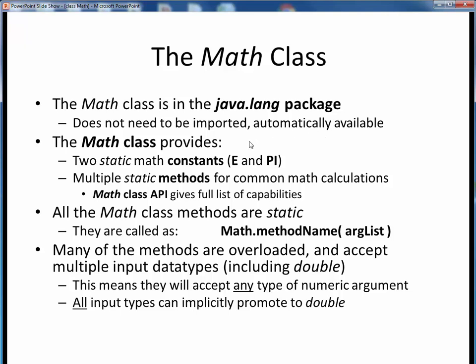The Math class provides two standard mathematical constants for the natural log e and for pi. It also provides a number of methods to perform many common math calculations. These lecture notes will give only an abridged version of what's in the Math class. For a full list of its capabilities, you'll need to explore its Java API, which we'll do soon in a companion lecture.